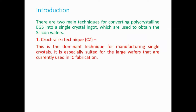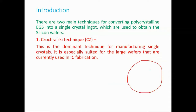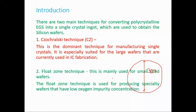The first technique is the CZ or Czochralski technique. This is the dominant technique for manufacturing single crystals and is especially suited for the large wafers currently used in IC fabrication. The wafer diameter is 300 millimeters these days. A rod-like structure called an ingot is generated and then cut into small pieces called wafers. In the Czochralski technique, a crystal is grown in the form of an ingot.